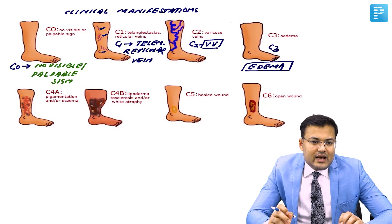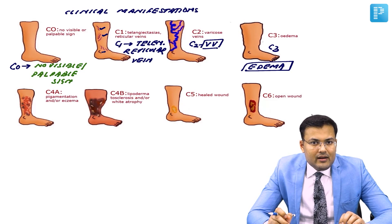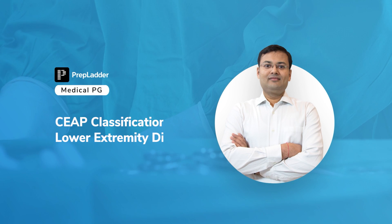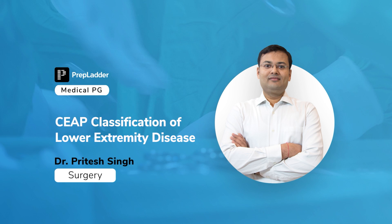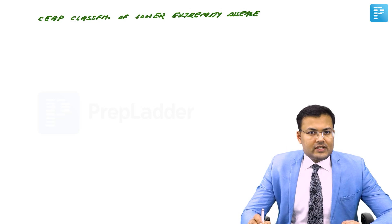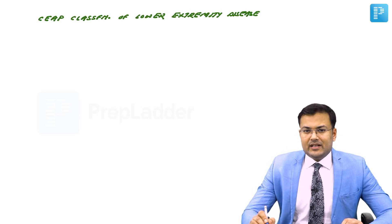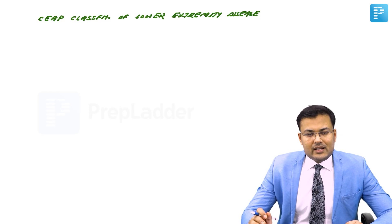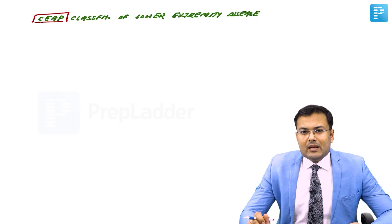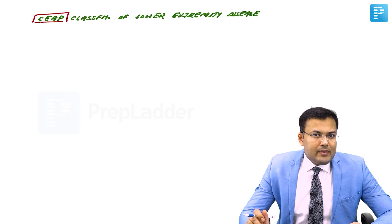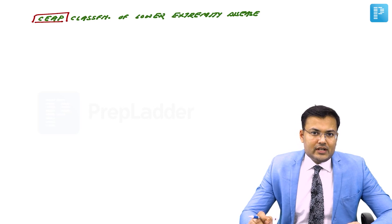In C4, complications start like hyperpigmentation, eczema, and lipodermatosclerosis. Now we are going to discuss the CEAP classification of lower extremity disease. This CEAP classification was asked in NEET-PG and INICET. C means clinical manifestations, E means etiological classification, A is anatomical distribution, and P is pathophysiological dysfunction.